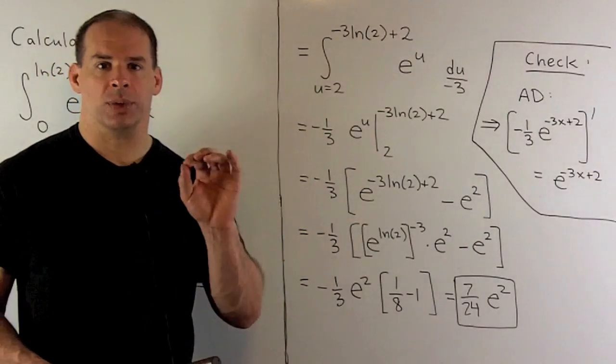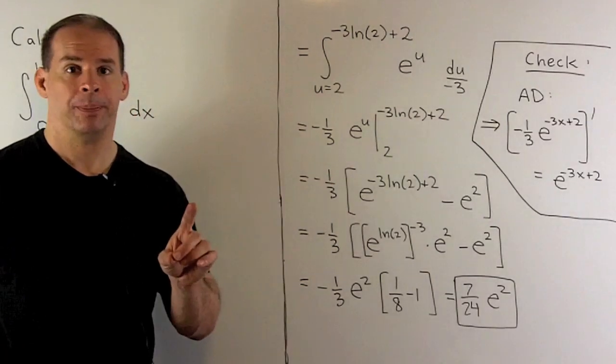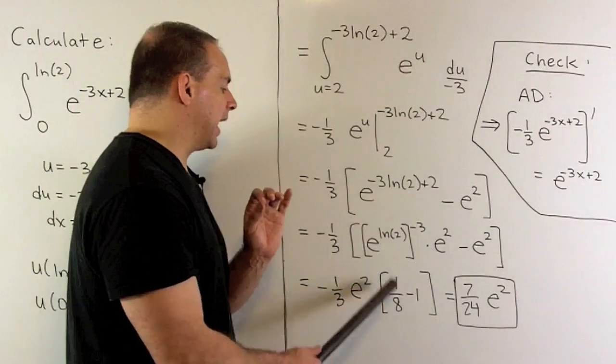Now, e to the natural log of 2 is equal to 2. e and natural log of box just equals to box. They cancel. So I have 2 to the minus 3, which is 1 eighth.